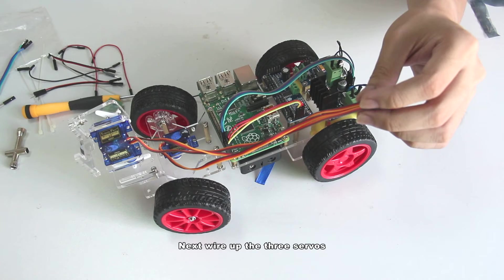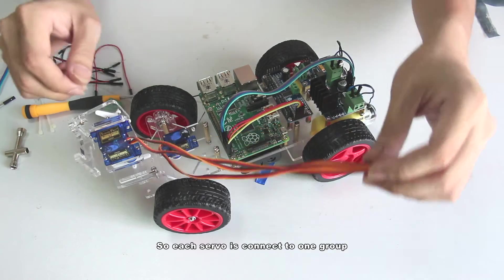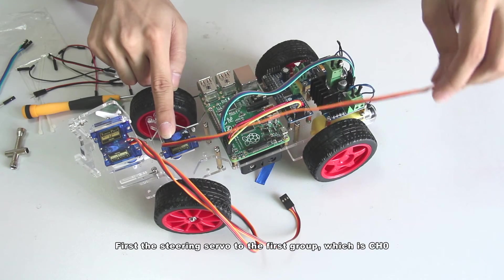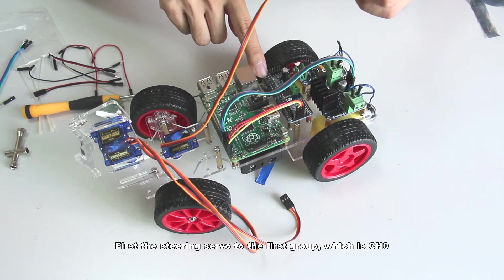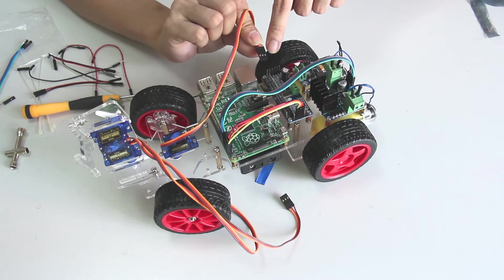Next wire up the 3 servos. There are 16 channels in the driver which is represented by the 16 groups of pins on it. So each servo is connected to one group. First the steering servo to the 1st group which is channel 0. Take the wires, connect them in the correct order. See the color.